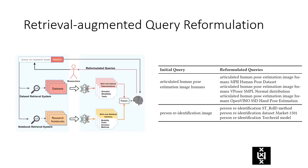We first retrieve a list of datasets and notebooks based on the user's initial query, and then we aggregate the multi-view representations of them and consider them pseudo-relevant context. Then we instruct the LMs to generate a list of new queries based on this context. As shown in this table, the reformulated queries provide researchers with insights into useful datasets or methods for further investigation.